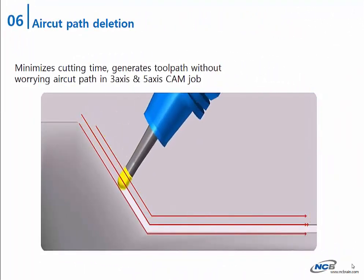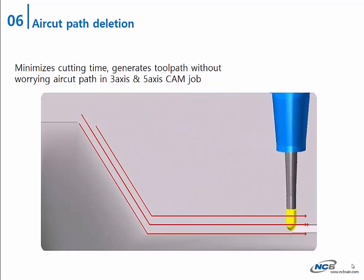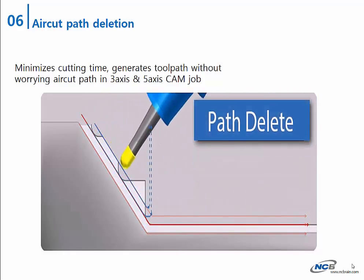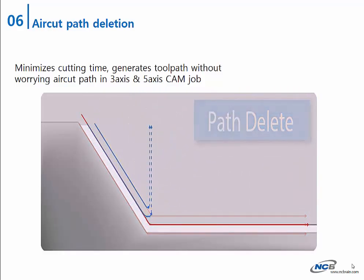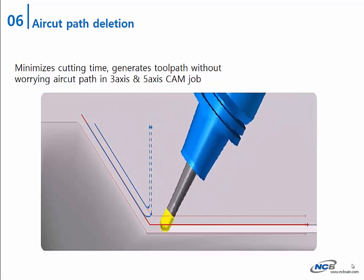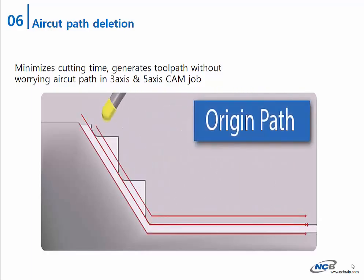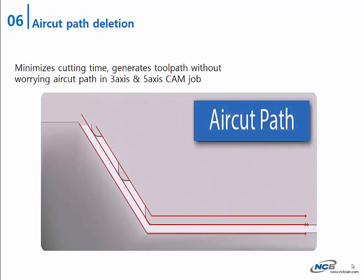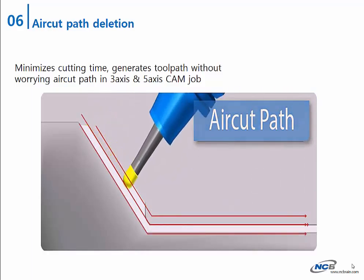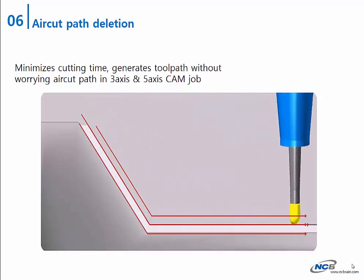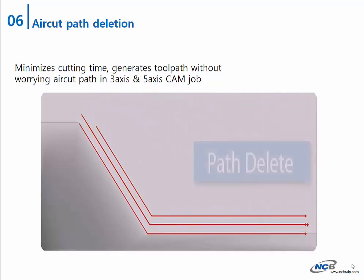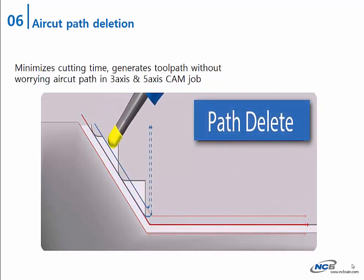Third, occasionally you will face air cut areas which waste too much time. NCBrain will delete these air cut areas automatically and thus save a lot of milling time. Another big stress of making perfect CAM data will be gone too.